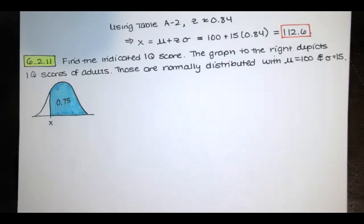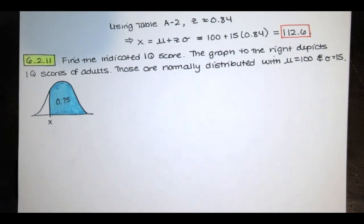In this video, we solve problem 6.2.11 from Essentials of Statistics, 6th edition by Mario Triola. We're asked to find the indicated IQ score. The graph depicts IQ scores of adults, which are normally distributed with a mean of 100 and a standard deviation of 15. We want the IQ score that separates the top 75% from the rest.